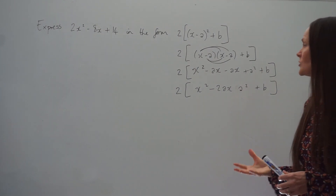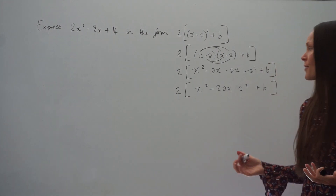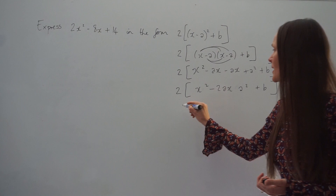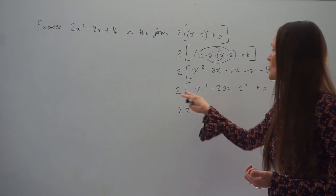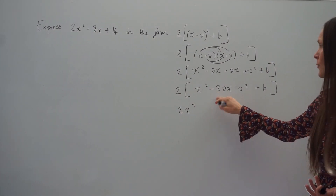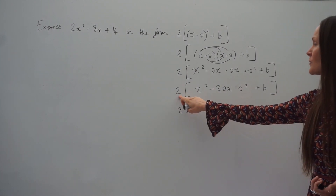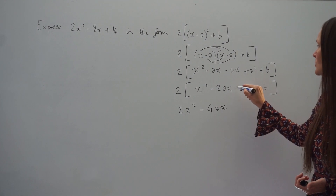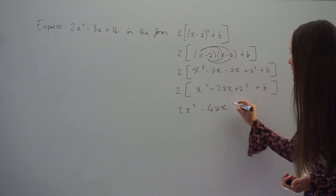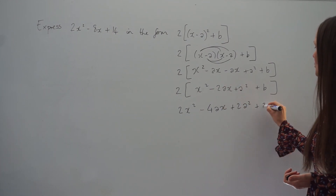One more thing we're going to do to get rid of the brackets is to multiply everything by 2. So 2 multiplied by x squared is 2x squared. 2 multiplied by negative 2ax is negative 4ax. Then we have 2a squared. And then 2 multiplied by b is 2b.